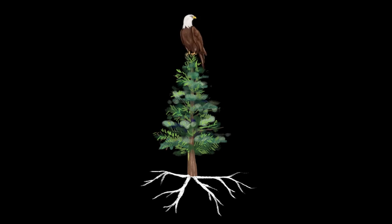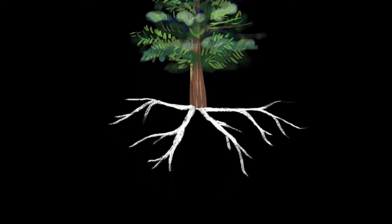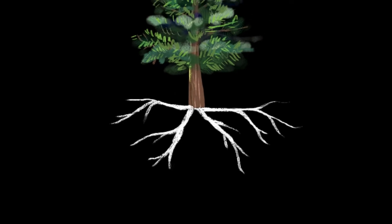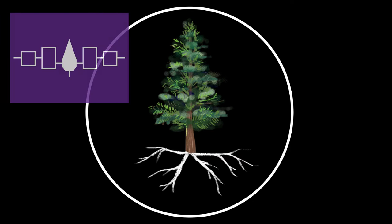The guardian eagle perches at the top of the tree, watching out for anything that might disrupt the peace of the people who choose to live their lives with it. It is said that buried underneath the soil is a Haudenosaunee War Club, which represents the end to the warring and fighting between nations. Those that had accepted the message of peace united under the tree and joined to form the Confederacy.